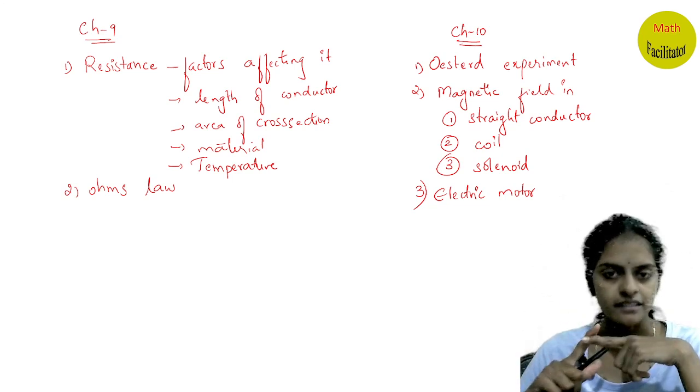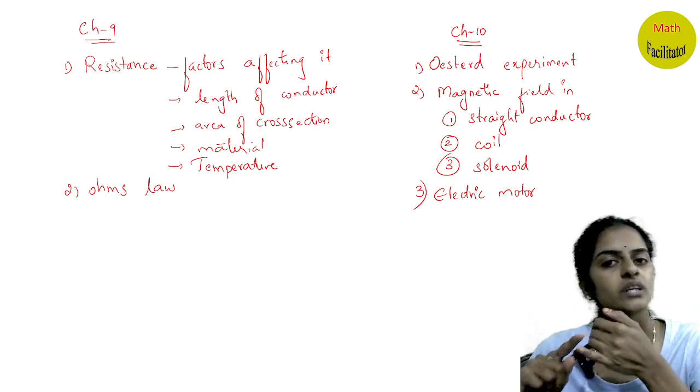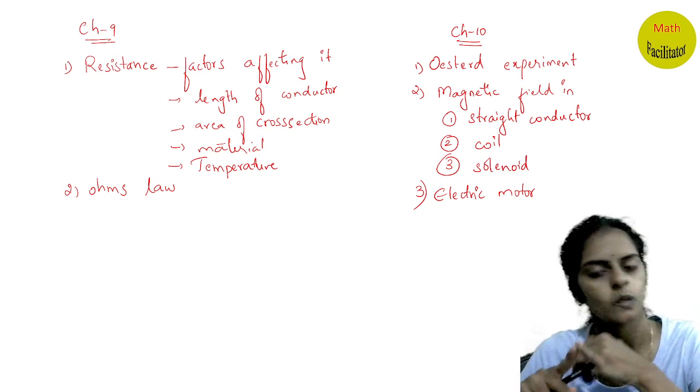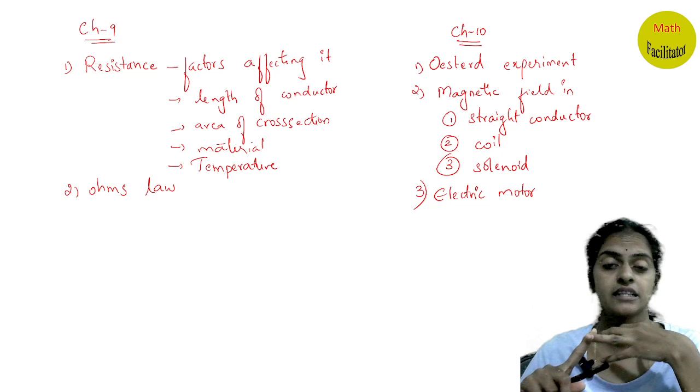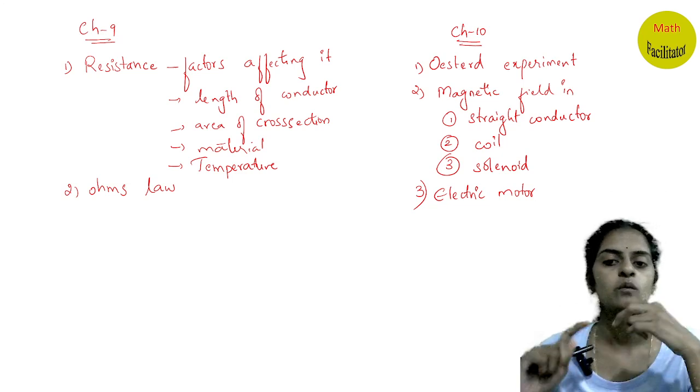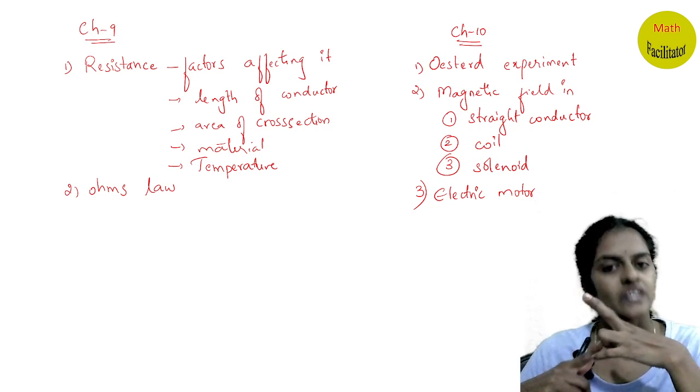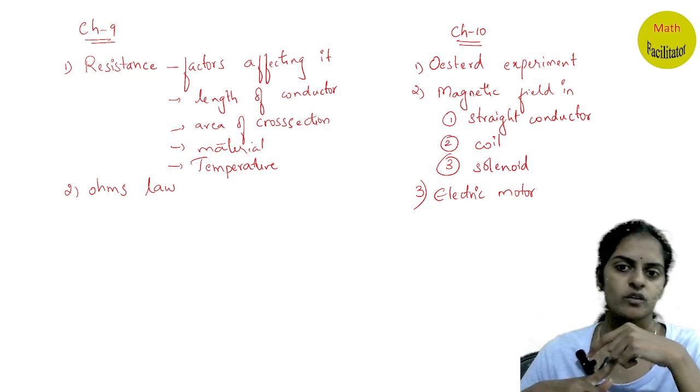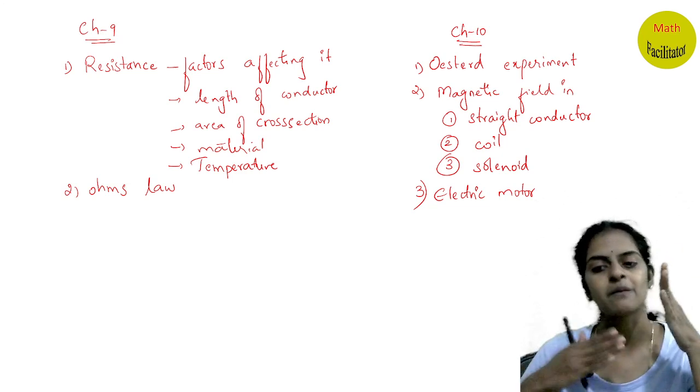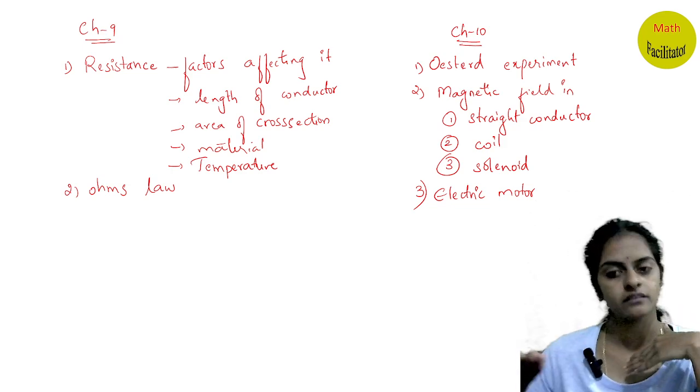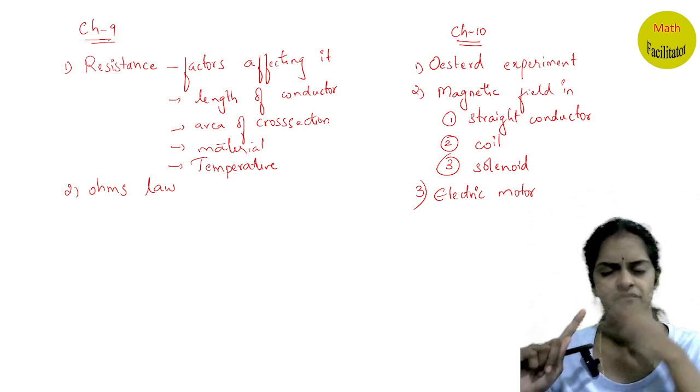Now coming to chapter number 10, you have what is electromagnetism. You will anyway read the definition. Then what is Oersted experiment? So what is the magnetic field created with the help of a current carrying straight conductor, coil and solenoid. So you have three activities. These are three activities under one heading, magnetic field created due to a current carrying straight conductor, coil and a solenoid. Very important.